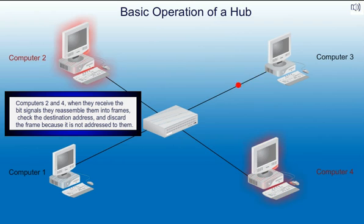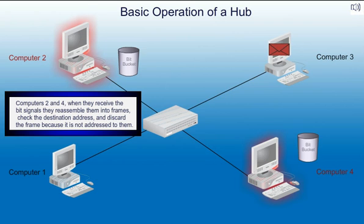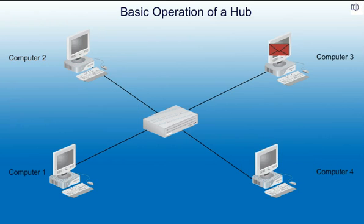Computers 2 and 4, when they receive the bit signals, they reassemble them into frames, check the destination address, and discard the frame because it's not addressed to them.